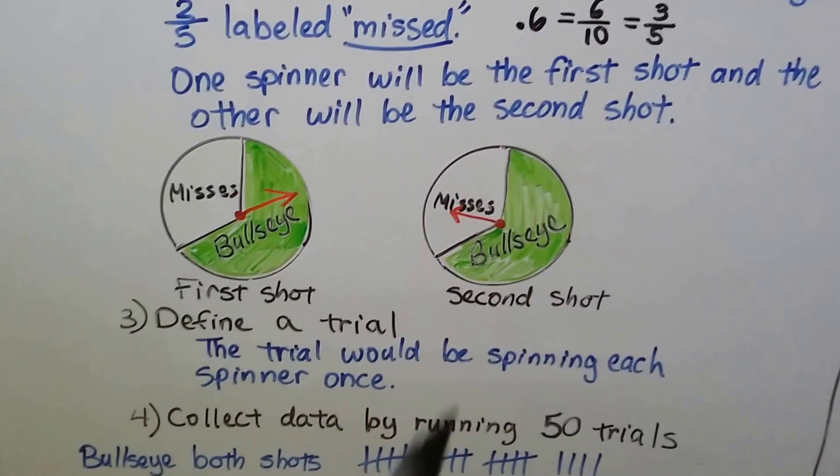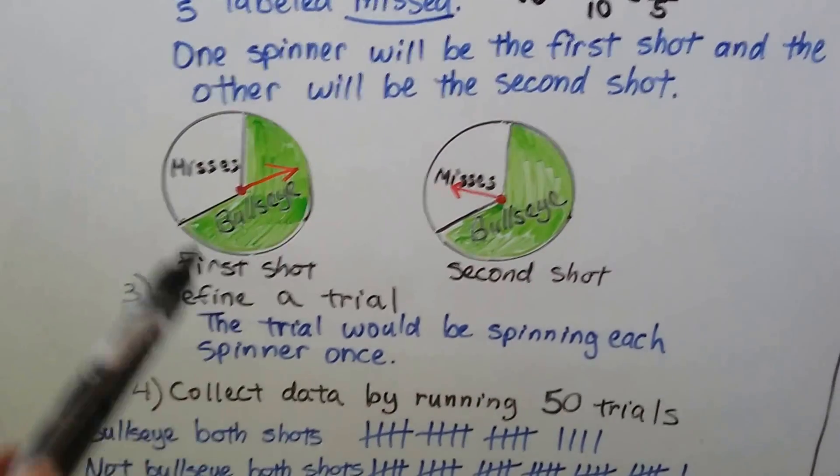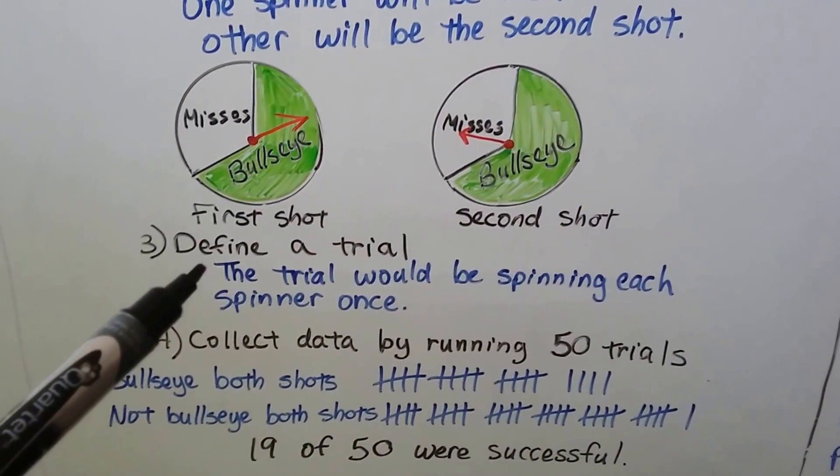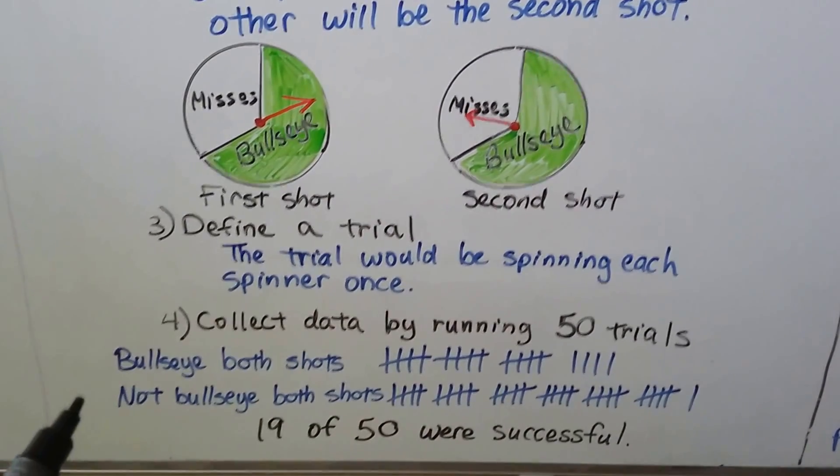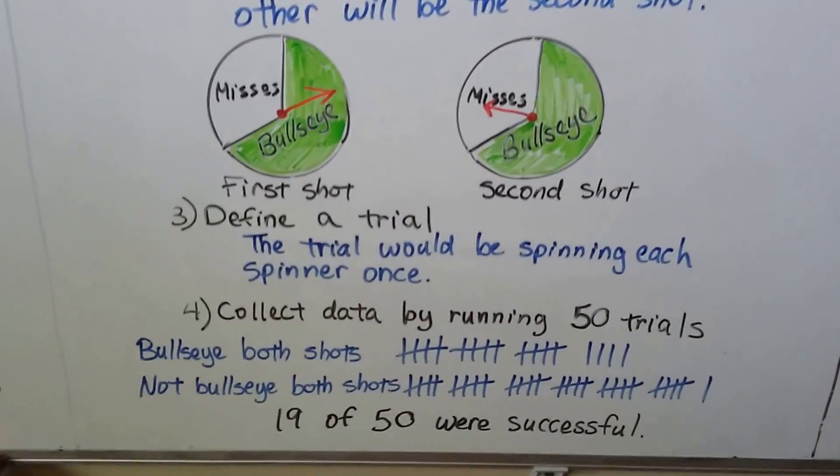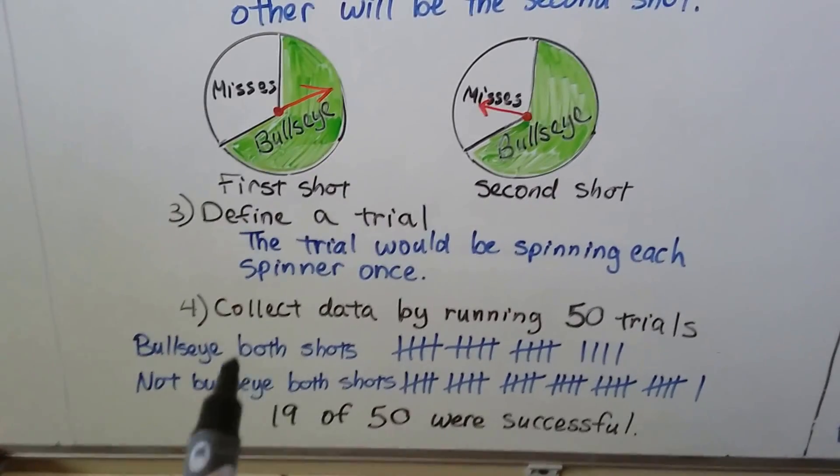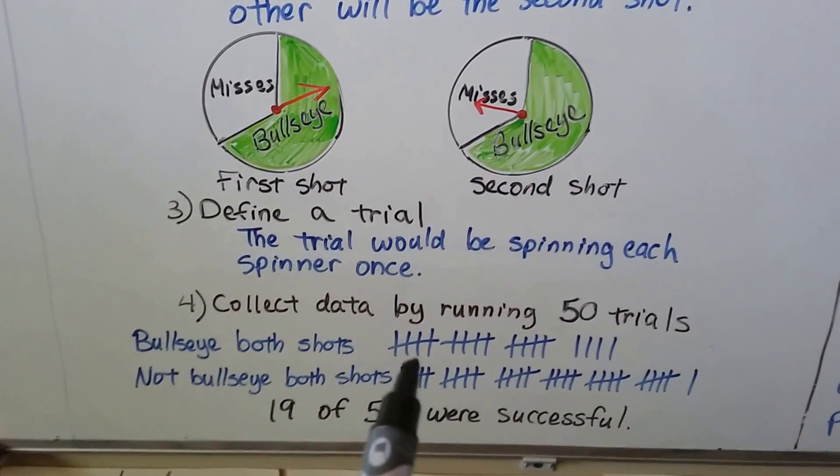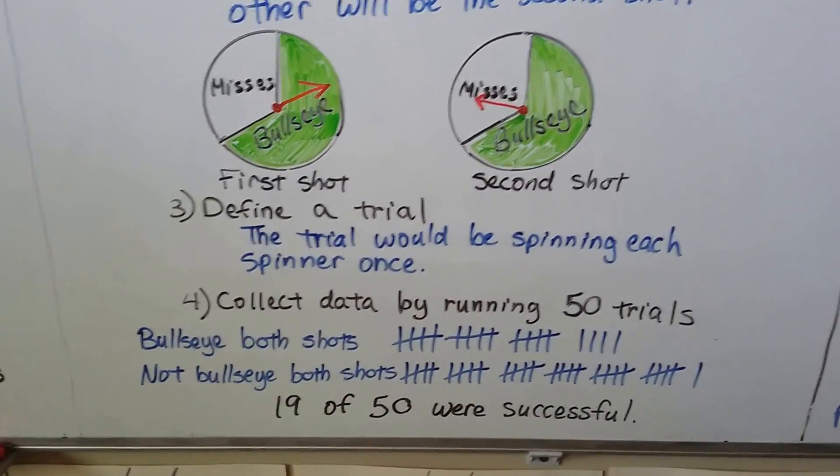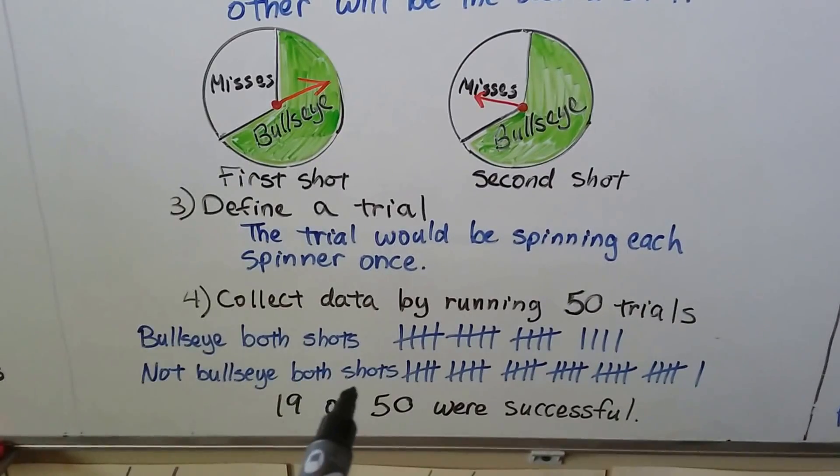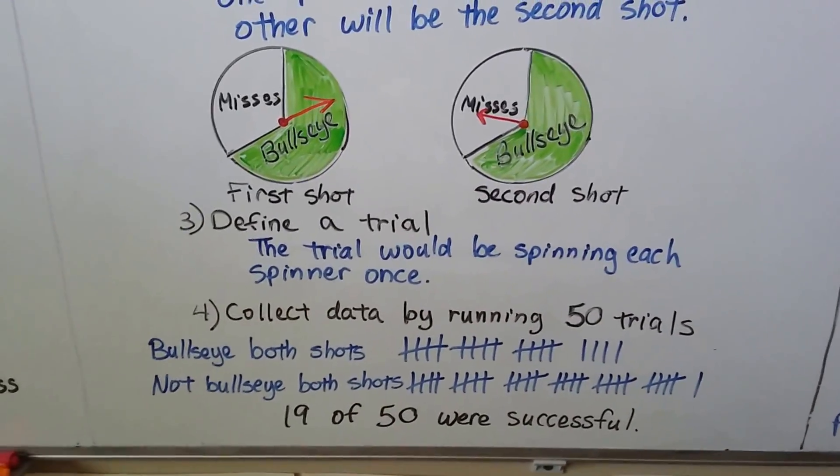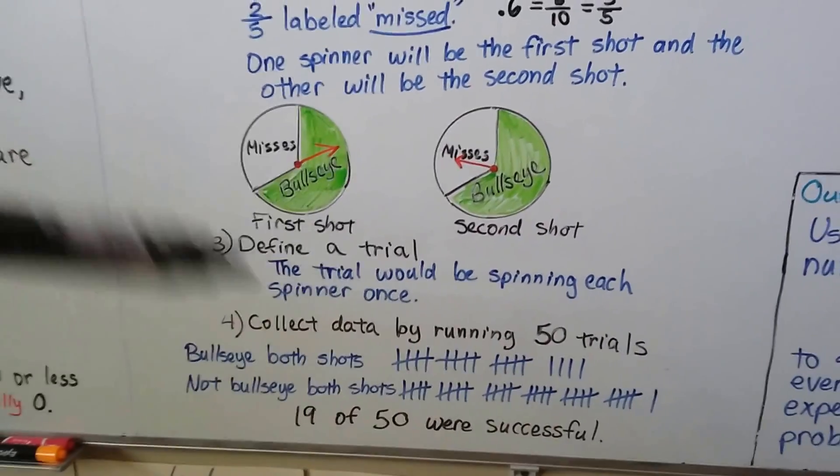So if we make these two spinners, one spinner will be the first shot, and the other will be the second shot. We can define a trial. The trial would be spinning each spinner once, and we can collect data by running 50 trials. So we do it 50 times, spinning these. So we can say bullseye for both shots would be maybe 19 if we did this experiment. It could be some other number, but we're going to say it's 19. And let's say that not bullseyes for both shots would be 31. So 19 out of 50 were successful.